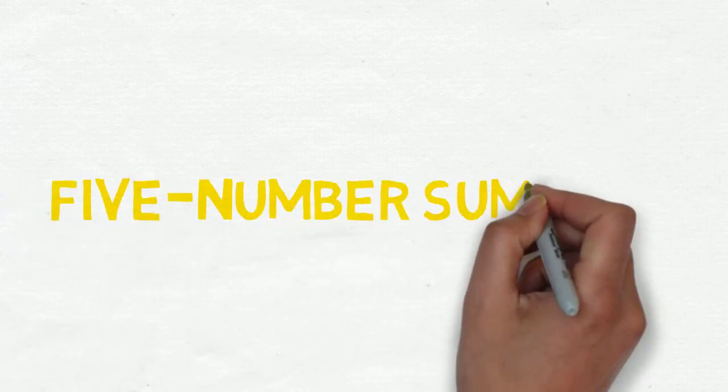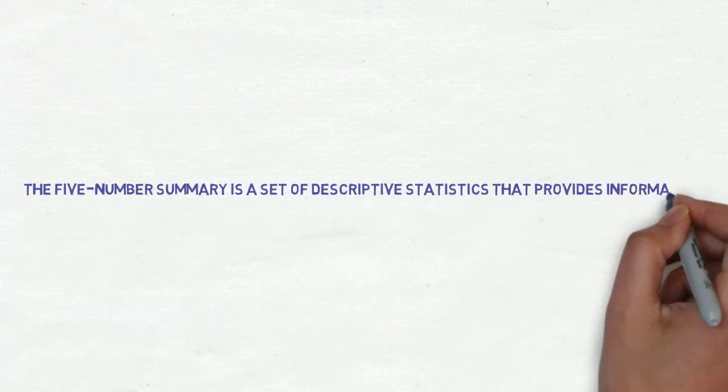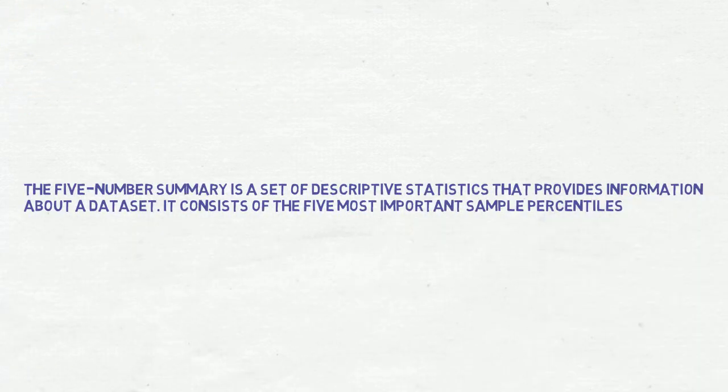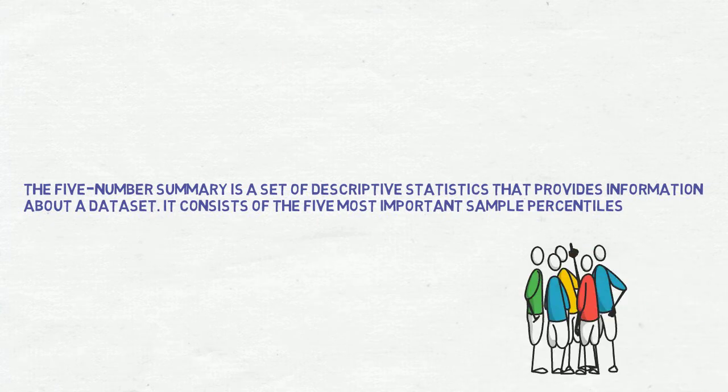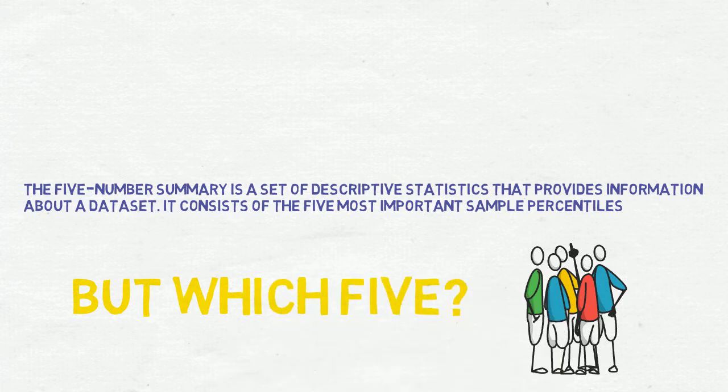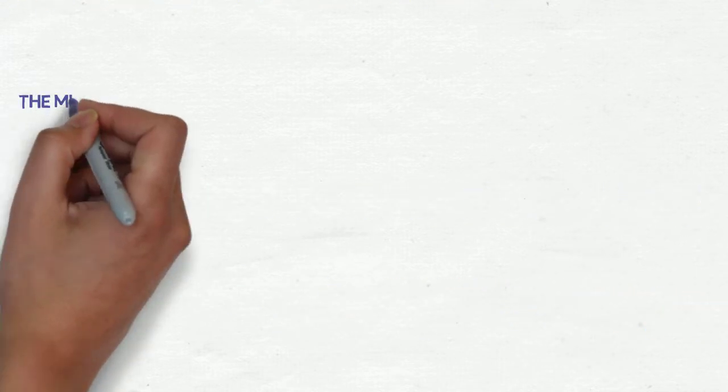In this video, we are going to see about the five-number summary. By general definition, the five-number summary is a set of descriptive statistics that provides information about a data set. It consists of the five most important sample percentiles. So it is clear that there are to be five numbers in our summary, but which five? Let's see.